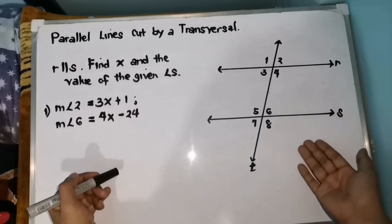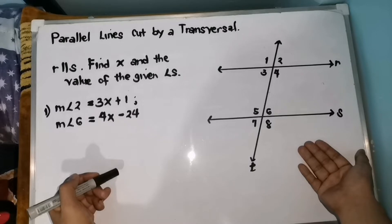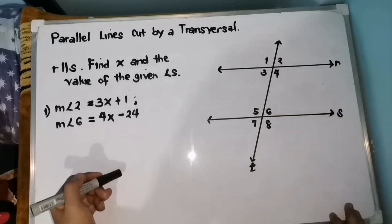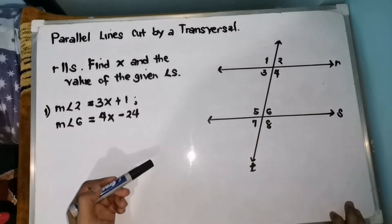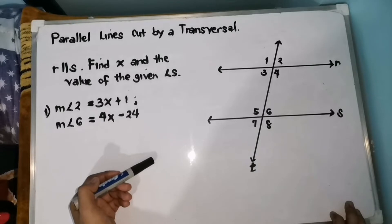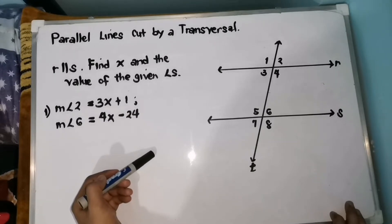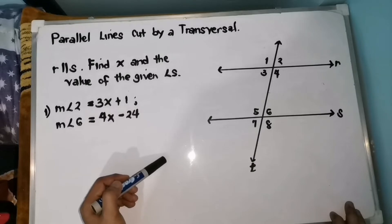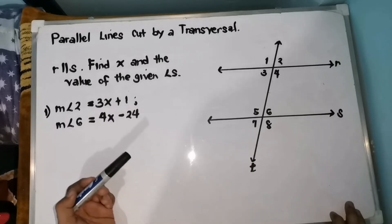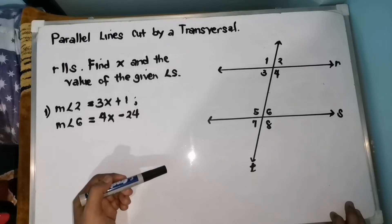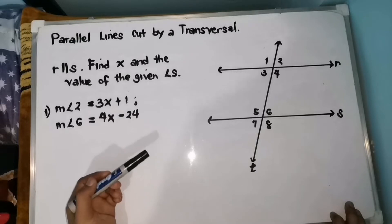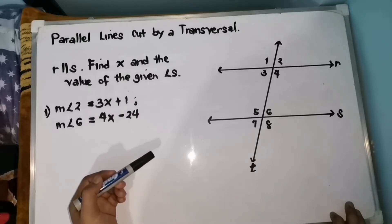we have here our given illustration. Line R is parallel with line S cut by a transversal T. We are going to find the value of X for us to find the value of the given angles. The most important thing here is kailangan ay alam nyo yung properties of parallel lines cut by a transversal. Kapag meron tayo ditong parallel lines cut by a transversal, ay makakabuo tayo ng iba't ibang angle pairs and relationships. I have a separate video regarding that, so much better na panoorin nyo muna. Or kapag alam nyo na yung mga angle pairs and relationships, ay madadalihan na kayo to tell whether the two given angles ay congruent or supplementary. So let's have first the review.